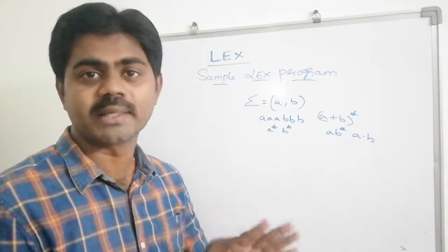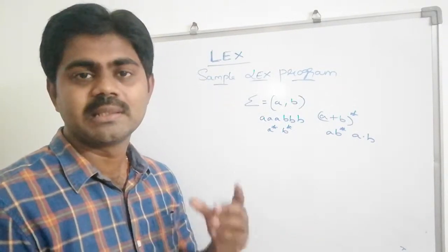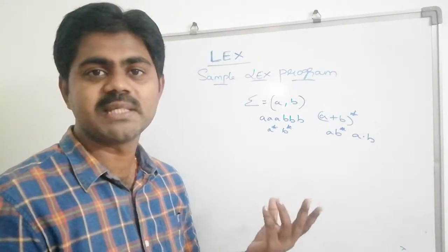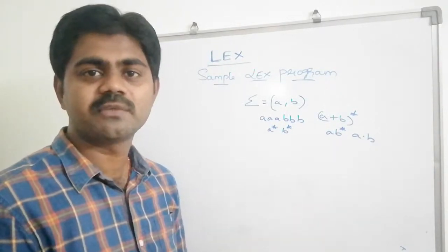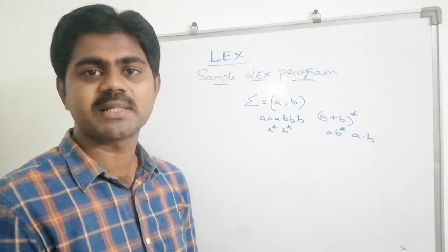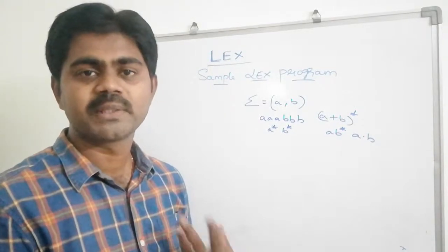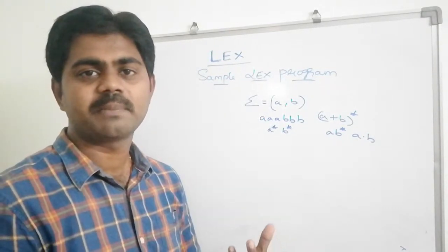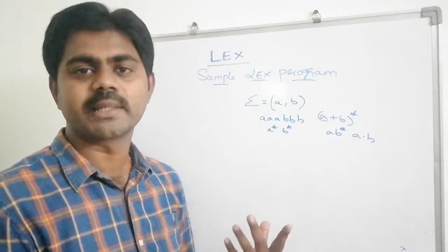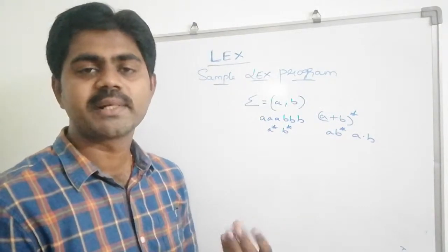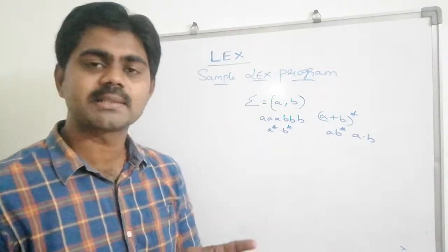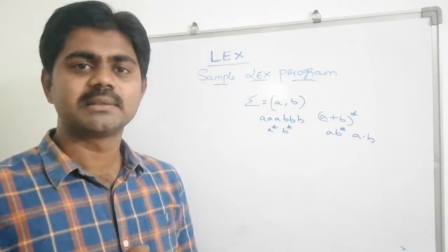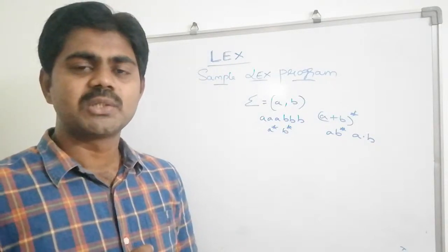A regular expression always specifies your tokens, because our input alphabet is defined that way. For example, if C = a + b * 5, that is a regular expression — C, a, +, b, *, 5 are all tokens. So a regular expression always specifies tokens. But how do we specify a token? Do we have any specification file?